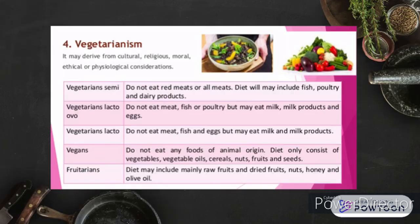Number four is vegetarianism, which may derive from cultural, religious, moral, ethical, or physiological considerations. Semi-vegetarians do not eat red meat or all meats; their diet may include fish, poultry, and dairy products. Lacto-ovo vegetarians do not eat meat, fish, or poultry but may eat milk, milk products, and eggs. Lacto vegetarians do not eat meat, fish, or eggs but may eat milk and dairy products. Vegans do not eat any foods of animal origin — their diet consists only of vegetables, vegetable oils, cereals, nuts, fruits, and seeds. Fruitarians eat mainly raw and dried fruits, nuts, honey, and olive oil.